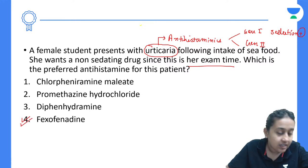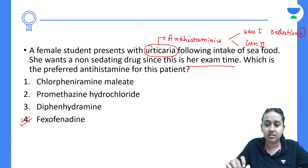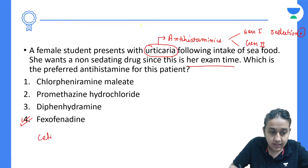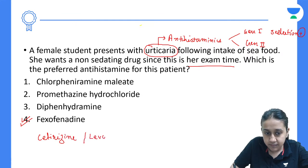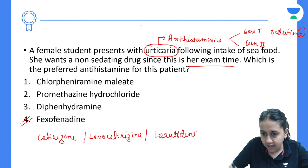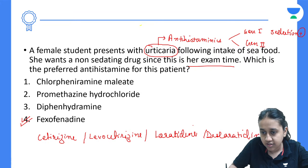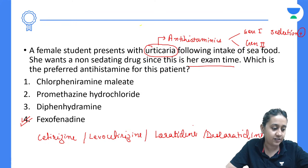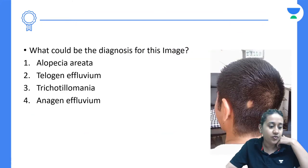The answer is fexofenadine. Other second-generation antihistaminics include cetirizine, levocetirizine, loratadine, and desloratadine — all are second-generation antihistaminics including fexofenadine.